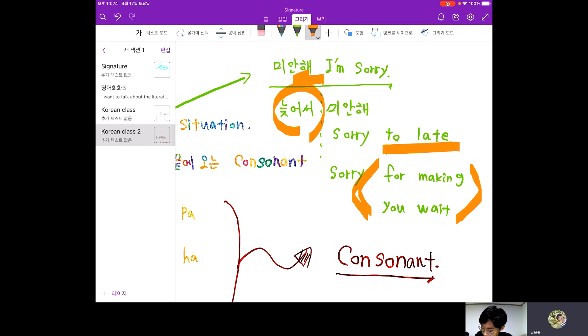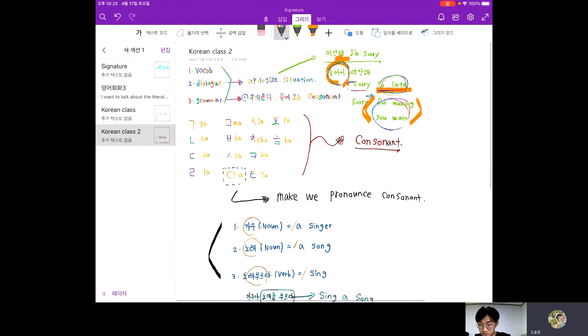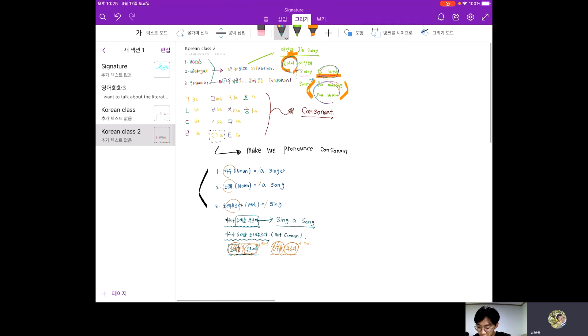But in English, you put the reason behind the sorry. This and this have similar meaning. But in Korean, you put this in front of the sorry. But in English, you put this behind the sorry. That's the big deal between Korean and English. Today, we learned about vocabularies about sing, we learned about dialogues, when we have to apologize something to someone.